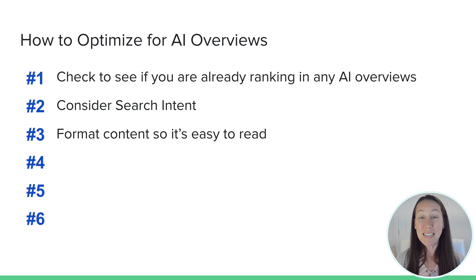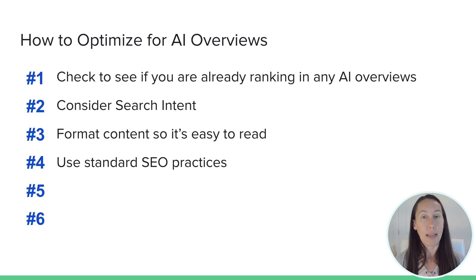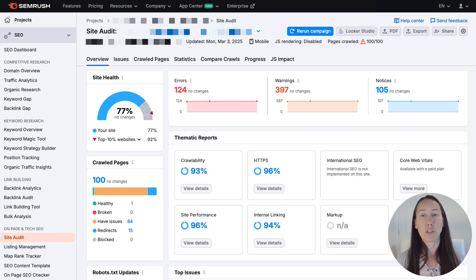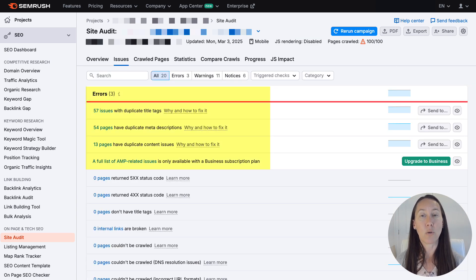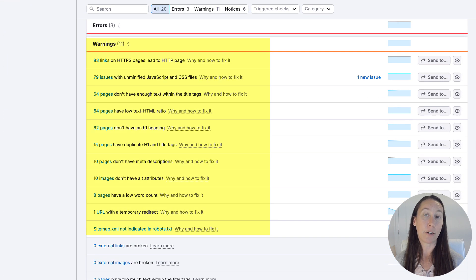The next thing you want to do is continue with standard SEO practices, just as you would to rank in organic search results. This means having a good internal linking structure, making sure you have a mobile-friendly website, good page speed, and quality backlinks coming in. A good place to start is simply by running a site audit and checking for errors and warnings to see if there's anything you can do to better clean up your website from a technical aspect.